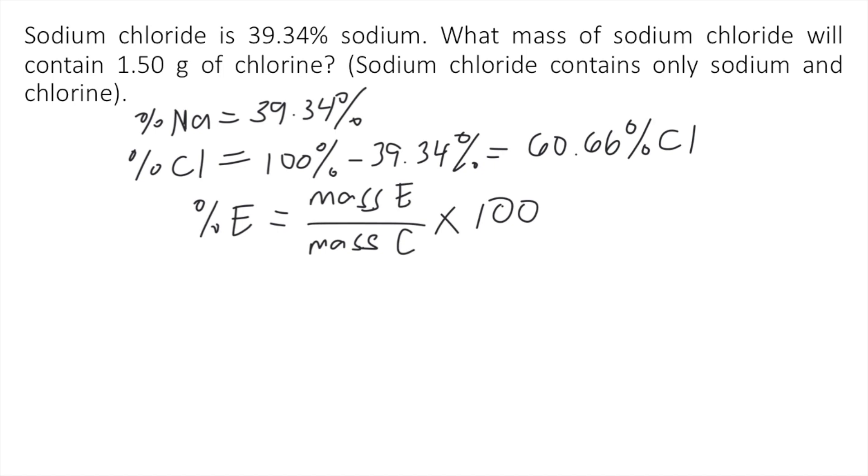So 60.66% equal to the mass of the element is given in the problem. It says here 1.50 grams of chlorine. So 1.50 grams divided by the mass of the compound, which we do not know yet, times 100.